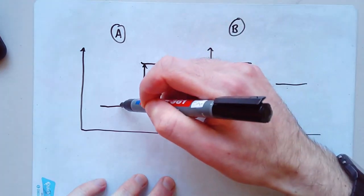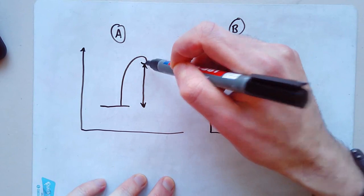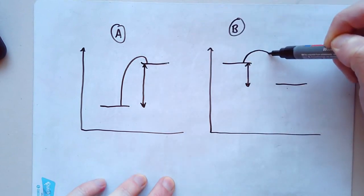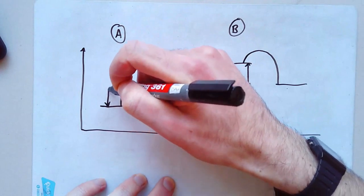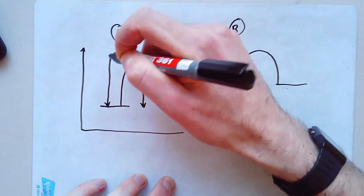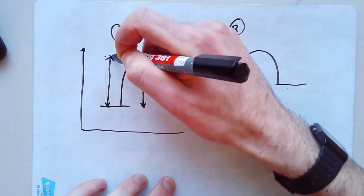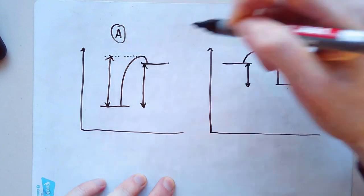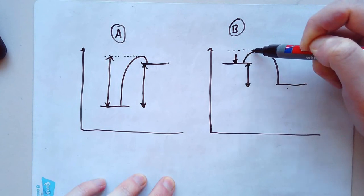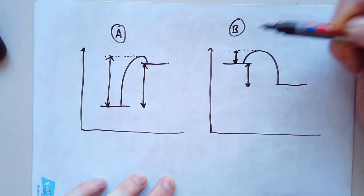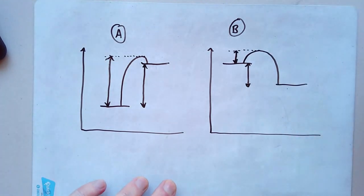So for that, we'll draw a line like this. In this one, our activation energy goes all the way up to the top of that point. And in this one, it goes to the top of that point. Which profile is endothermic and which is exothermic?